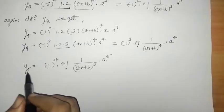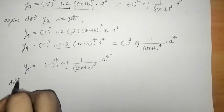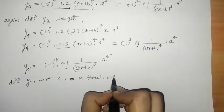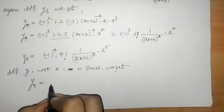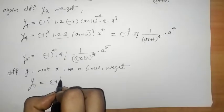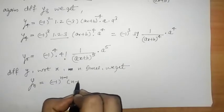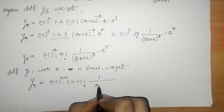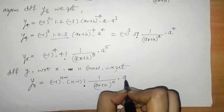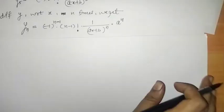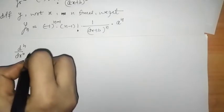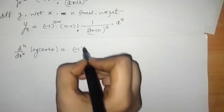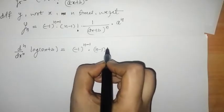In the same manner we can write yn. Differentiating y with respect to x n times, we get yn, which is given by: minus 1 raised to n minus 1, times n minus 1 factorial, times 1 upon ax plus b raised to n, times a raised to n. In this way we have found the nth derivative of log of ax plus b.